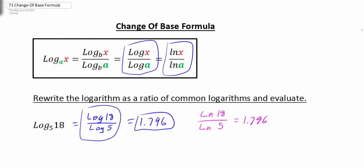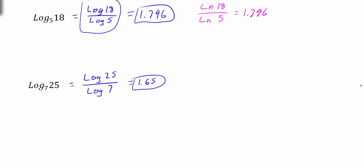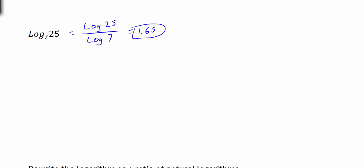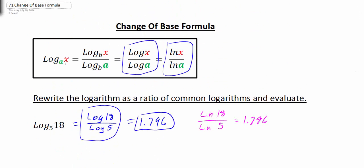So there you have your change of base formula. We could change these things to any bases that we like, but most likely you're going to use the common log or the natural log — whichever you prefer — to evaluate your logarithm. For example, if we have log base 7 of 25 and wanted to change the base from 7 to 3, we could write this as log base 3 of 25 divided by log base 3 of 7. If you evaluated this, you would still get the same answer of 1.65. So keep in mind: you're simply taking the log or natural log of x divided by the log or natural log of the base A.